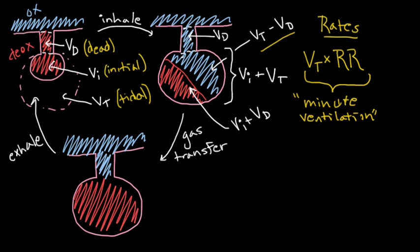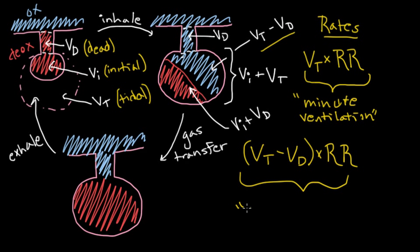But that's not necessarily the most interesting number for us to look at. What's more interesting is to ask how much fresh oxygen is coming into the alveoli every minute. And it's not Vt that's getting to the alveoli, it's Vt minus Vd. So if we want to make that a rate, we take it and we multiply it by the respiratory rate. And we call that the alveolar ventilation, which makes sense because it's the amount of fresh air that's getting to your alveoli every minute.